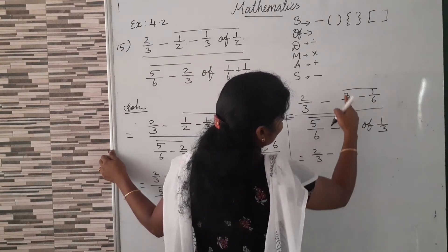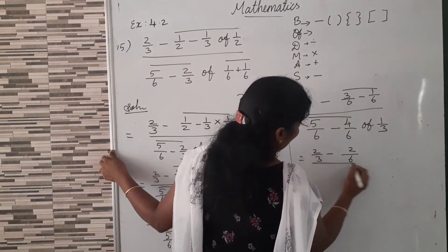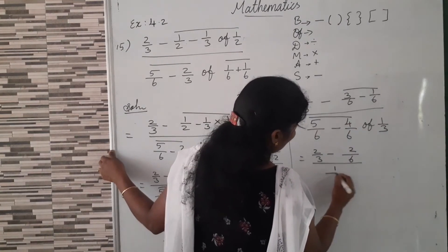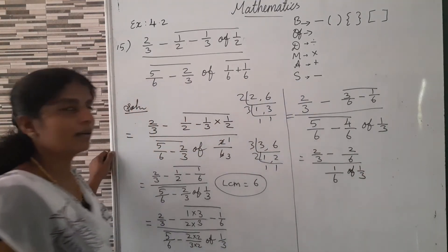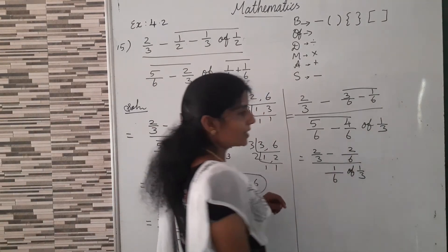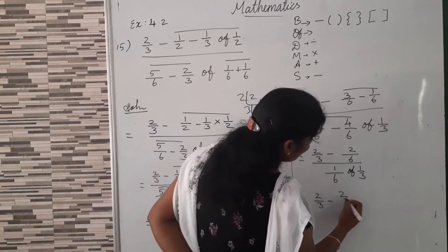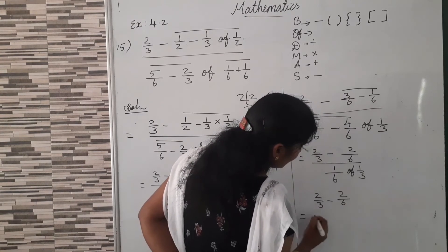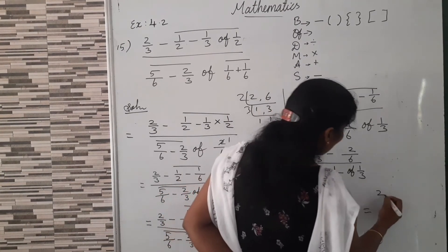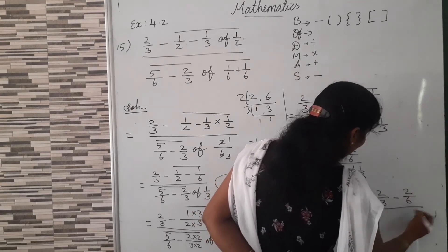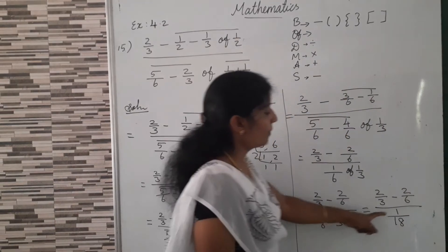Now equal to: 2/3 minus. 3 minus 1 by 6 — common denominator is 6, 3 minus 1 is 2. Divided by: here 5/6, 5 minus 4 is 1, by 6, common denominator is 6. Of 1/3. Now here, next preference for 'of'. So we can write: equal to 2/3 minus 2/6. Divided by 1/6 into 1/3. Equal to 2/3 minus 2/6. Divided by 1/6 into 1/3: 1 into 1 is 1, 6 into 3 is 18. So 1/18.